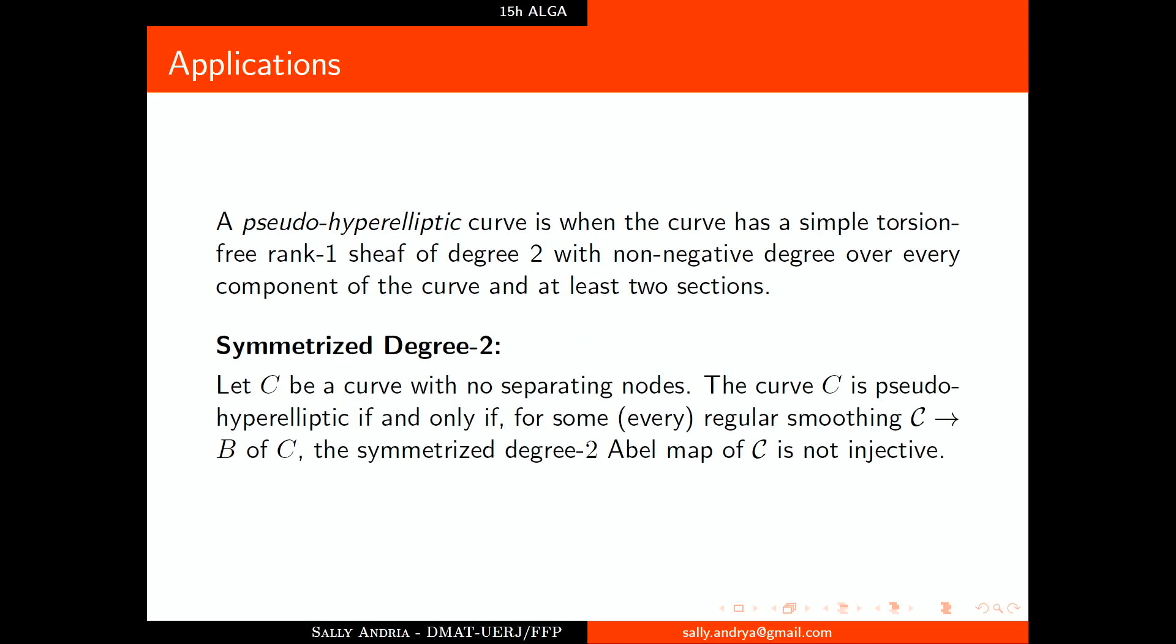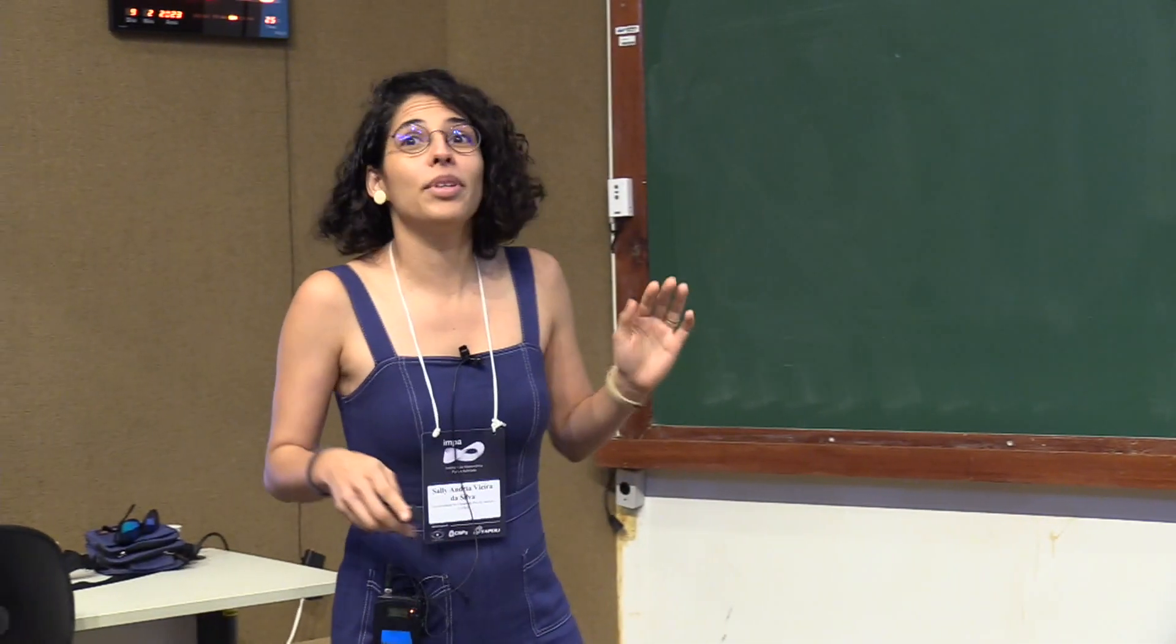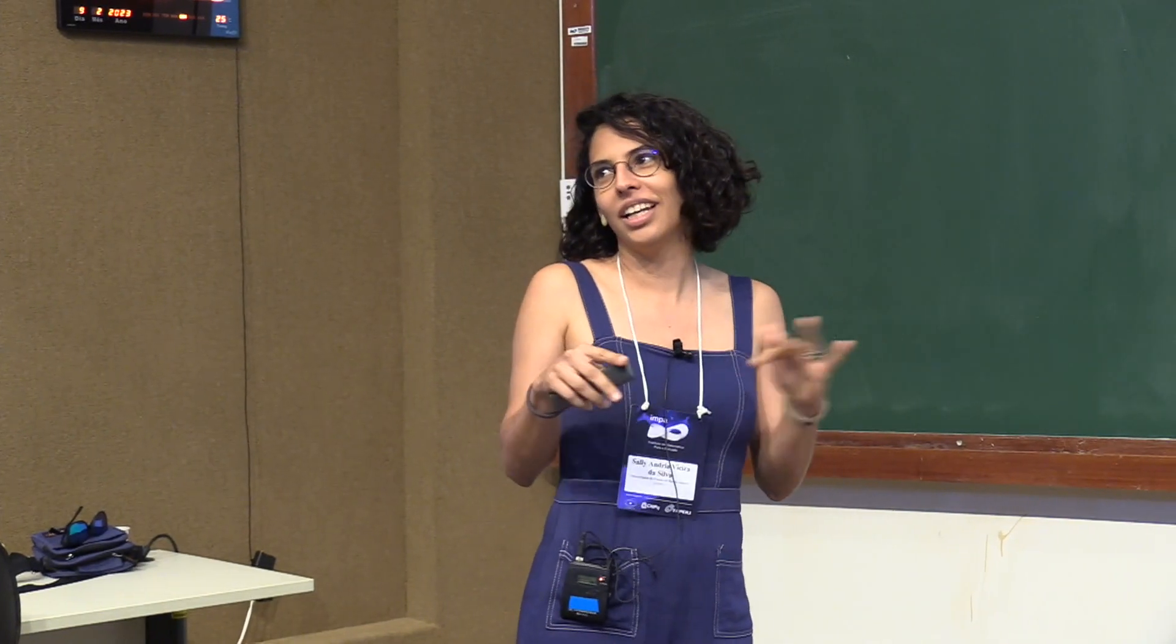If we remember, in the third slide I talked about the degree 2 Abel map detecting when the curve is hyperelliptic. So for a singular curve we saw when a curve is pseudo-hyperelliptic in the symmetrized degree 2. Let C be a curve with no separating nodes. The curve C is pseudo-hyperelliptic if and only if for some regular smoothing the symmetrized degree 2 Abel map of C is not injective.